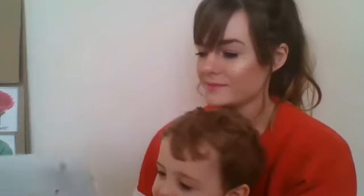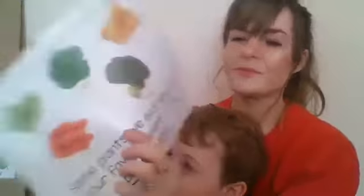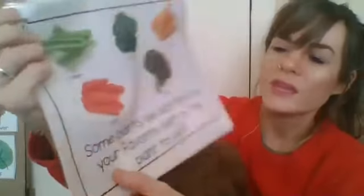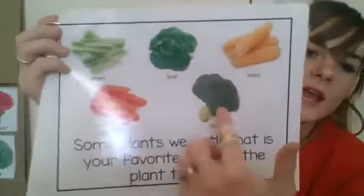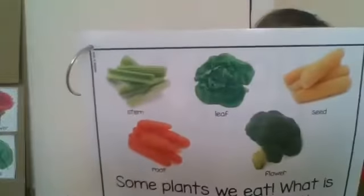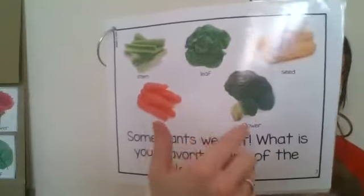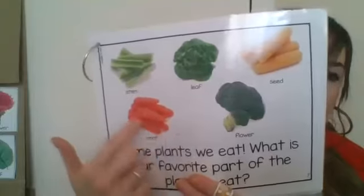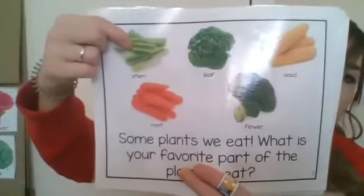There are some plants that we eat. I want you to take a minute and think of the plants that we eat. These are some plants that we eat — there are carrots and corn and broccoli and celery. We eat different parts of the plant. When we eat broccoli, we're eating the flower part. When we're eating corn, we're eating the seeds. When we're eating carrots, we're eating the root. And when we're eating celery, we're eating the stem.